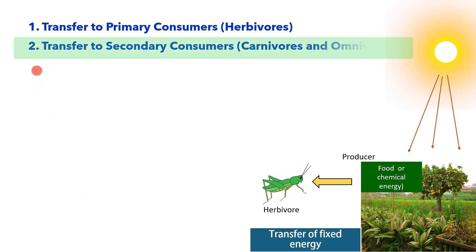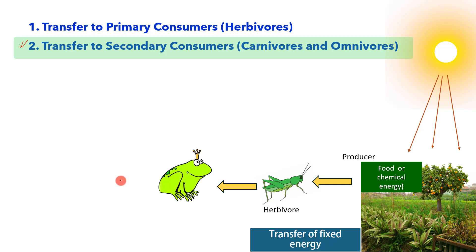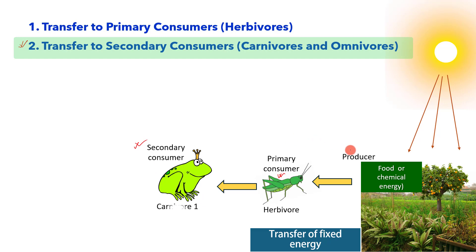Transfer of energy to secondary consumers — carnivores and omnivores. The herbivore is the source for the carnivore that feeds on herbivores. The grasshopper is eaten by the frog, and the energy is transferred to the secondary consumer. Secondary consumers, such as carnivores and omnivores, consume primary consumers and obtain energy from the stored chemical energy in the organisms they consume. In this way, energy flows up the food chain from producer to the grasshopper and then to the frog.